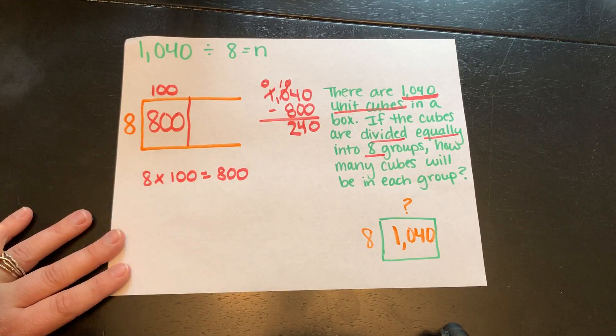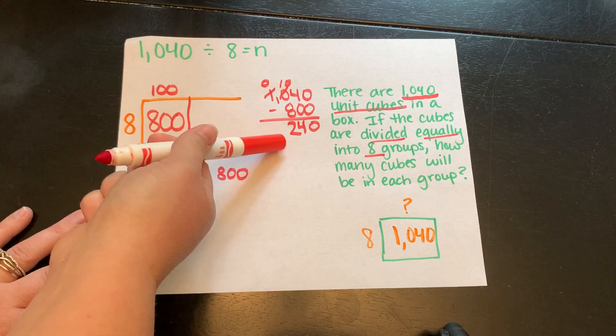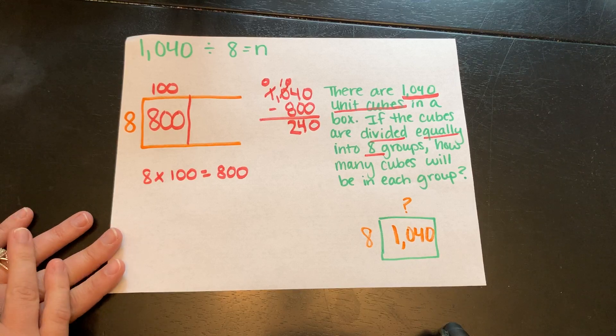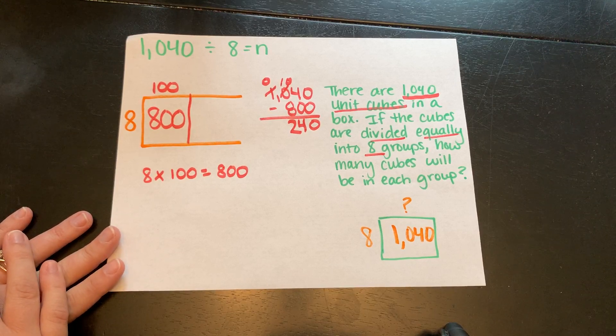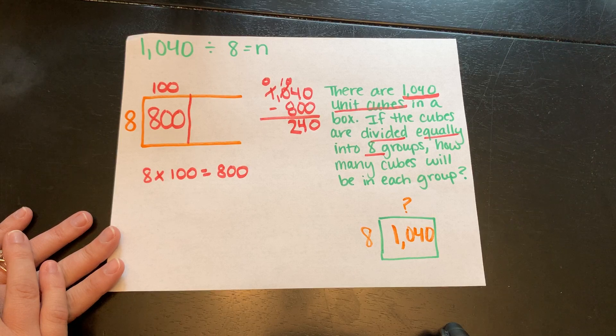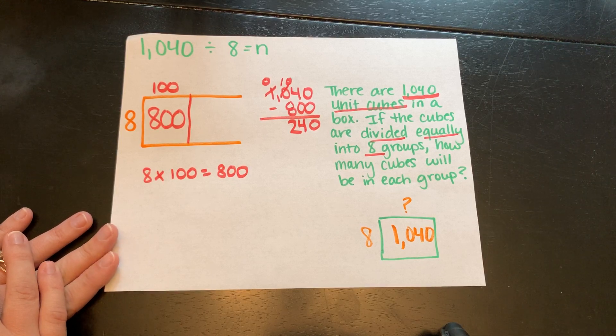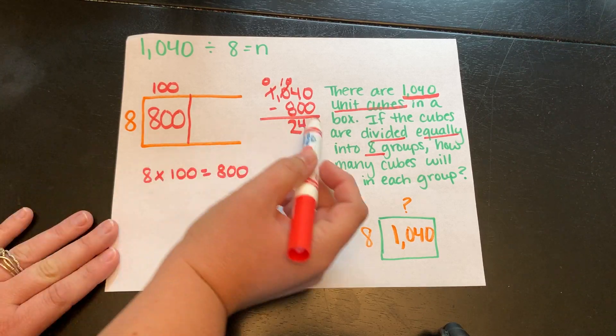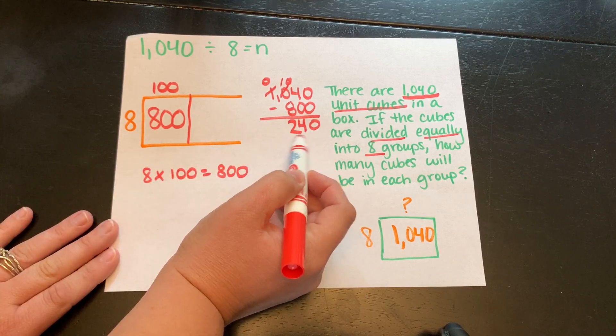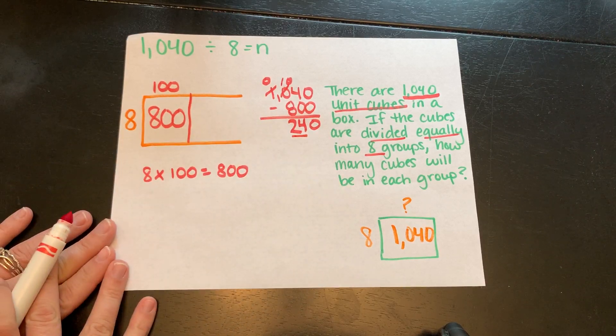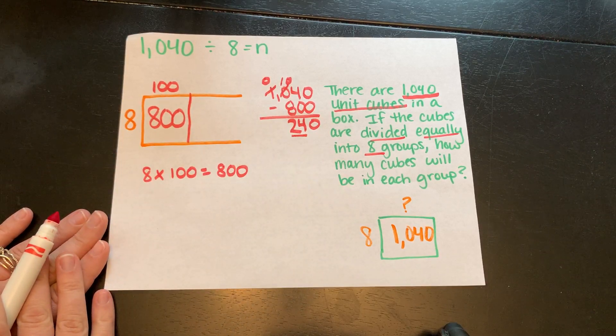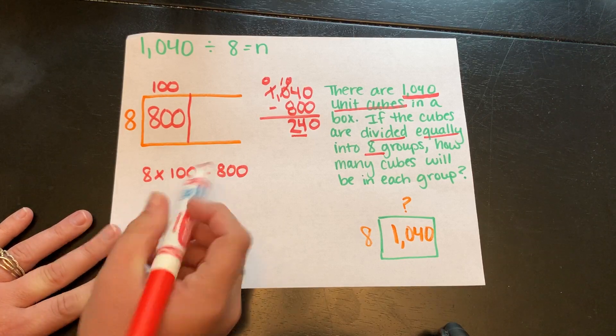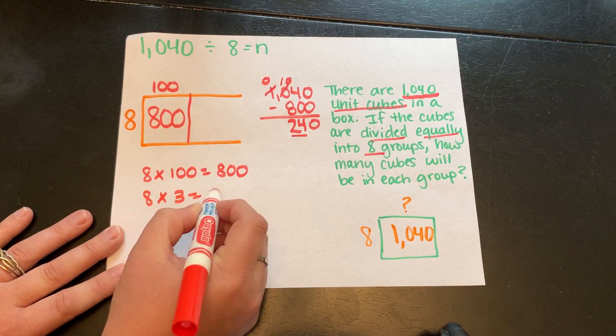Well, 8 times 10, we did that on the previous problem. That's only 80. We could probably get a bigger chunk out of that. You could use it if you want. That's the beauty of the partial quotient method is that you can use whatever multiplication facts you are familiar with. But we definitely want to make it less steps. We don't want to make it harder on ourselves. So we want to get this done in the fewest steps possible. I look at the front of this number. Thinking of my powers of 10 here. Is there something that you can multiply together by 8 that equals 24? Look at your multiplication chart if you have one.